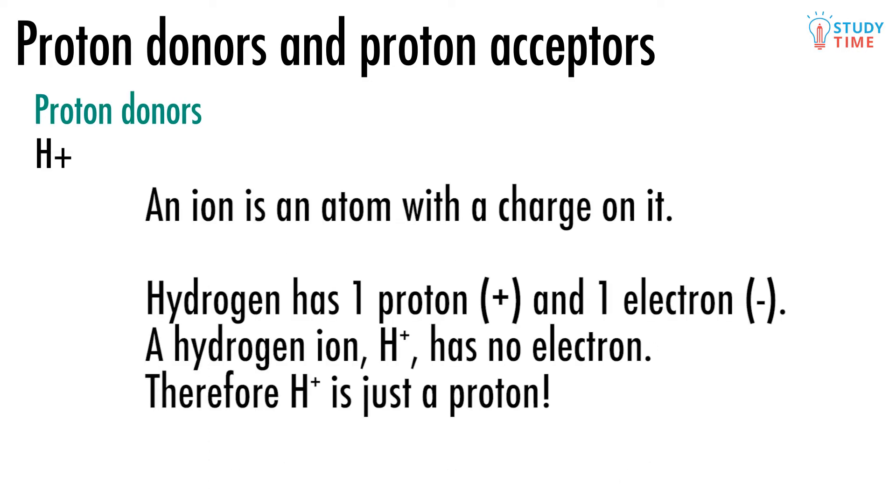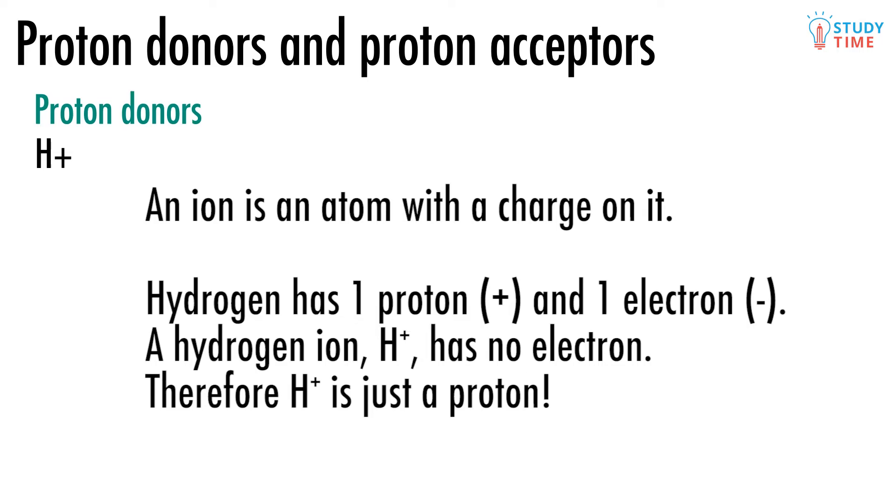Now remember what an ion is. An ion is an atom with a charge on it. So in the case of hydrogen, the ion has one positive charge and is hence a hydrogen atom which has lost an electron.